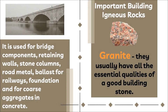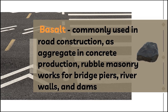Important building igneous rocks. Granite: It usually has all the essential qualities of a good building stone. It is used for bridge components, retaining walls, stone columns, road metal, ballast for railways, foundations, and for coarse aggregates in concrete. Basalt: It is commonly used in road construction, as aggregate in concrete production, and in rubble masonry works for bridge piers, river walls, and dams.